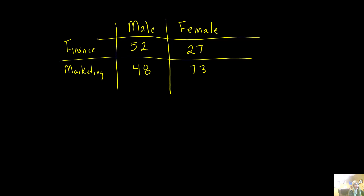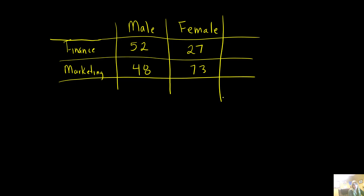Let's say I did a poll of students in my class, and just to make this a little easy, I'm going to say I have 100. If you look at the top, you'll see that I have 52 plus 27 — that would be how many are in finance and marketing — plus 48 males, 73. I'm going to say I have 100 males and 100 females, so 200 total.